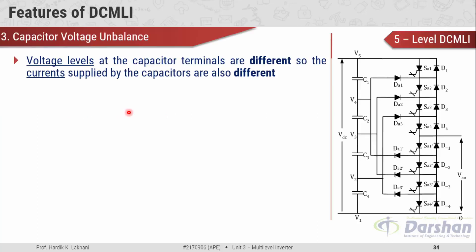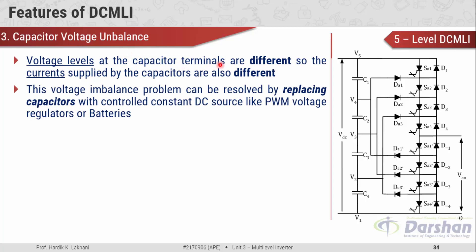Another feature of DC MLI is capacitor voltage unbalance. The voltage levels at the capacitor terminals are different: at node V2 the magnitude is VDC/4, then VDC/2, then 3VDC/4, and finally VDC. As a result, the currents supplied by the capacitors are also different. This voltage imbalance can be resolved by replacing the capacitors with controlled constant DC sources such as PWM voltage regulators or batteries.